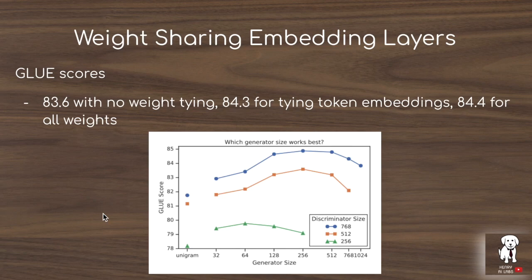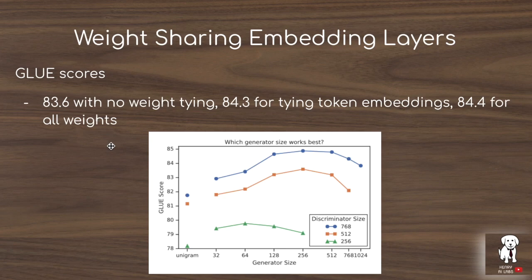Another interesting dimension explored in this paper is weight sharing between the generator and discriminator. They look at tying the weights for the token embeddings — the embedding layer that maps tokenized input (using WordPiece or byte pair encoding) into an embedding — used in both models, since both need to embed input tokens before passing them through transformer layers. They find a gain from tying token embedding weights, and a higher gain for tying all weights, though tying all weights has additional computational requirements.